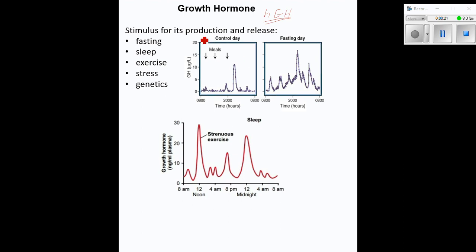So the stimulus for its production and release — we'll see on the next slide where it's produced and released from. The actual site of production and release is in the anterior pituitary, and it also involves stimulus coming from the hypothalamus. The stimuli are multiple: fasting is one of them, and it does lead to increased production and release of human growth hormone.